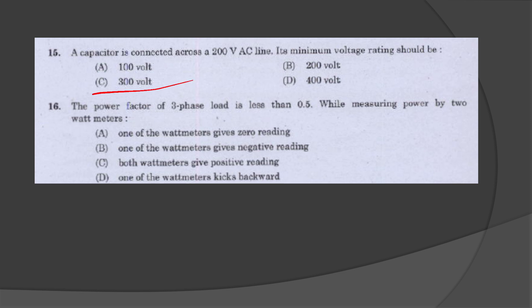The power factor of a 3-phase load is less than 0.5. While measuring power by 2 watt meters, one of the watt meters gives negative reading.